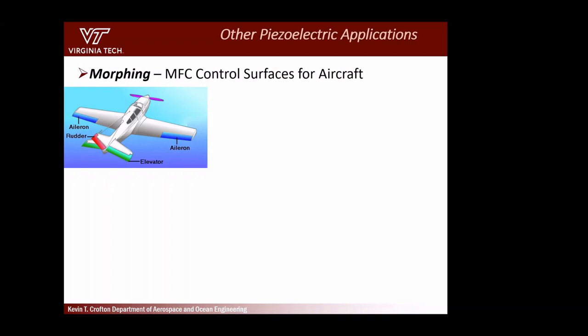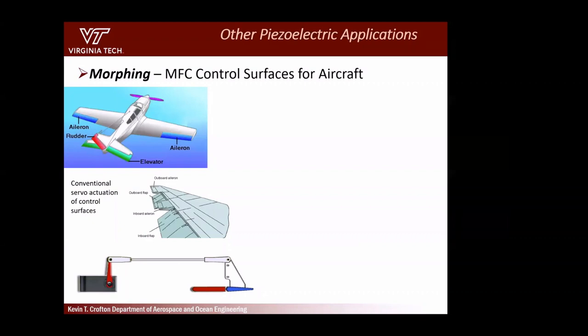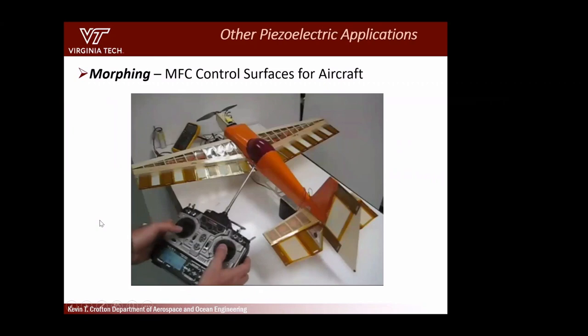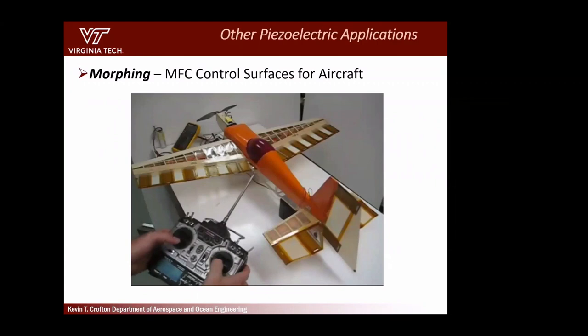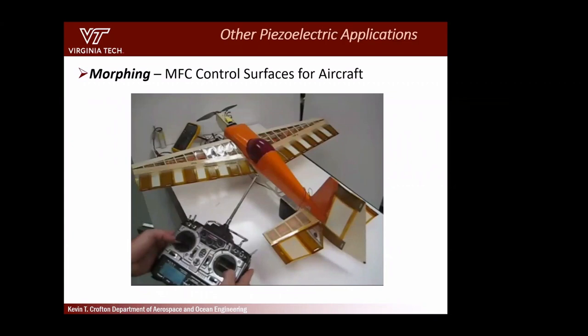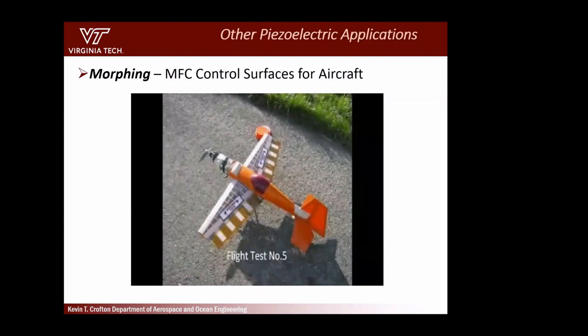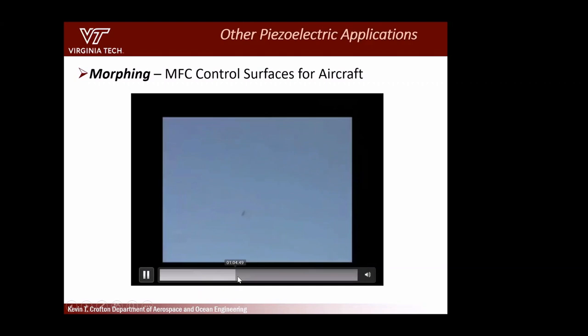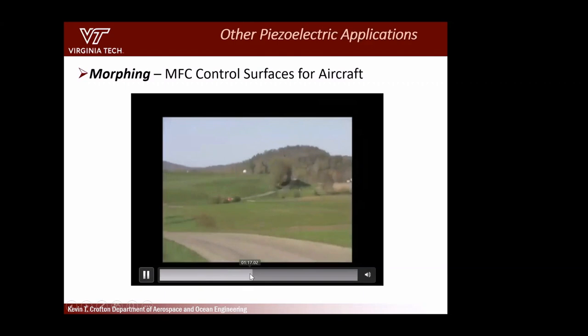Other applications are morphing control systems — getting rid of control surface hinges and using smart materials for morphing. I have a video of a senior design team where there are no hinges; it's just smart materials causing the control surfaces to deploy. This was a group of mechanical engineering students, and one thing I want to point out is that if they had some aerospace students, a certain mishap wouldn't have happened.